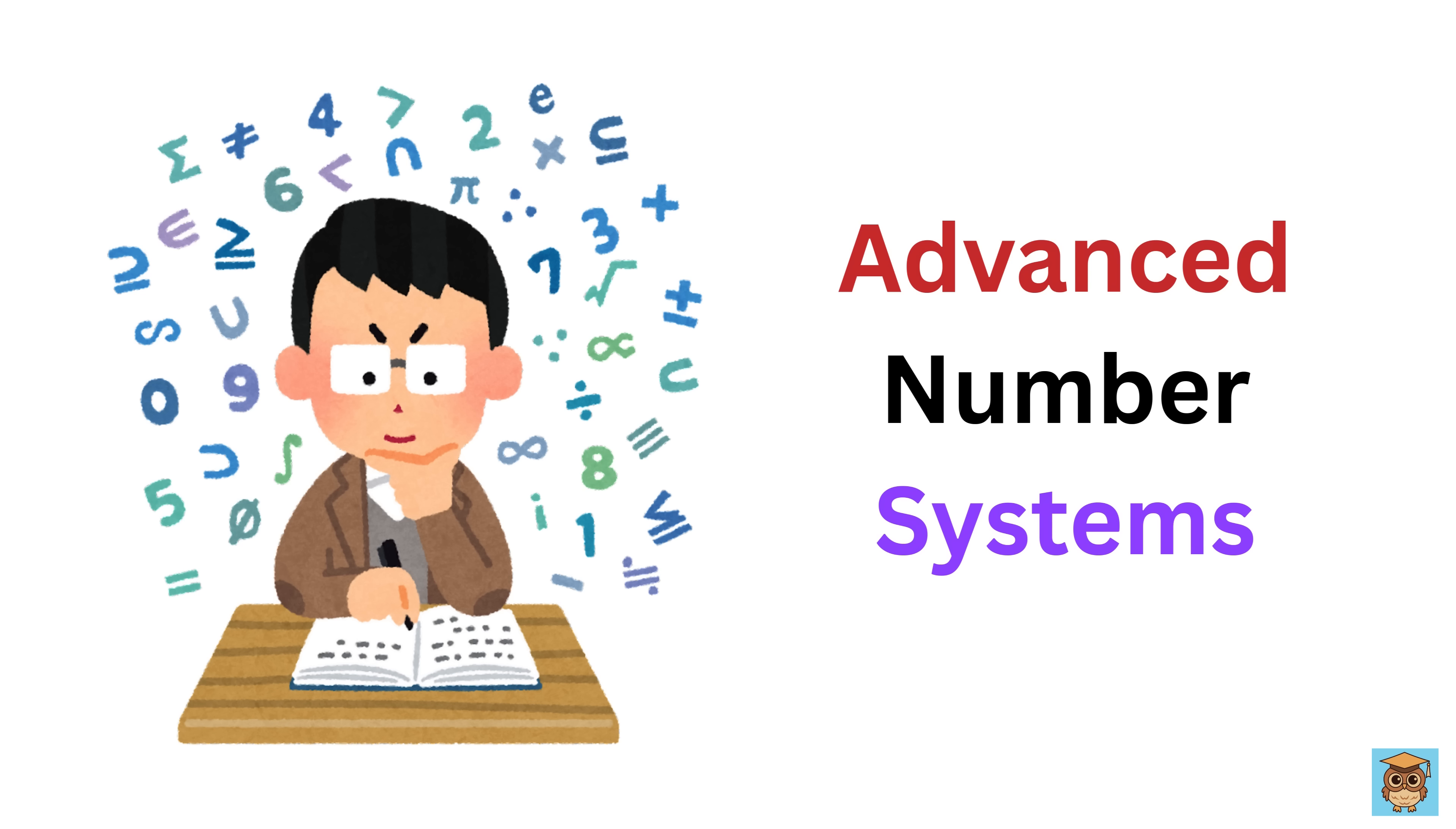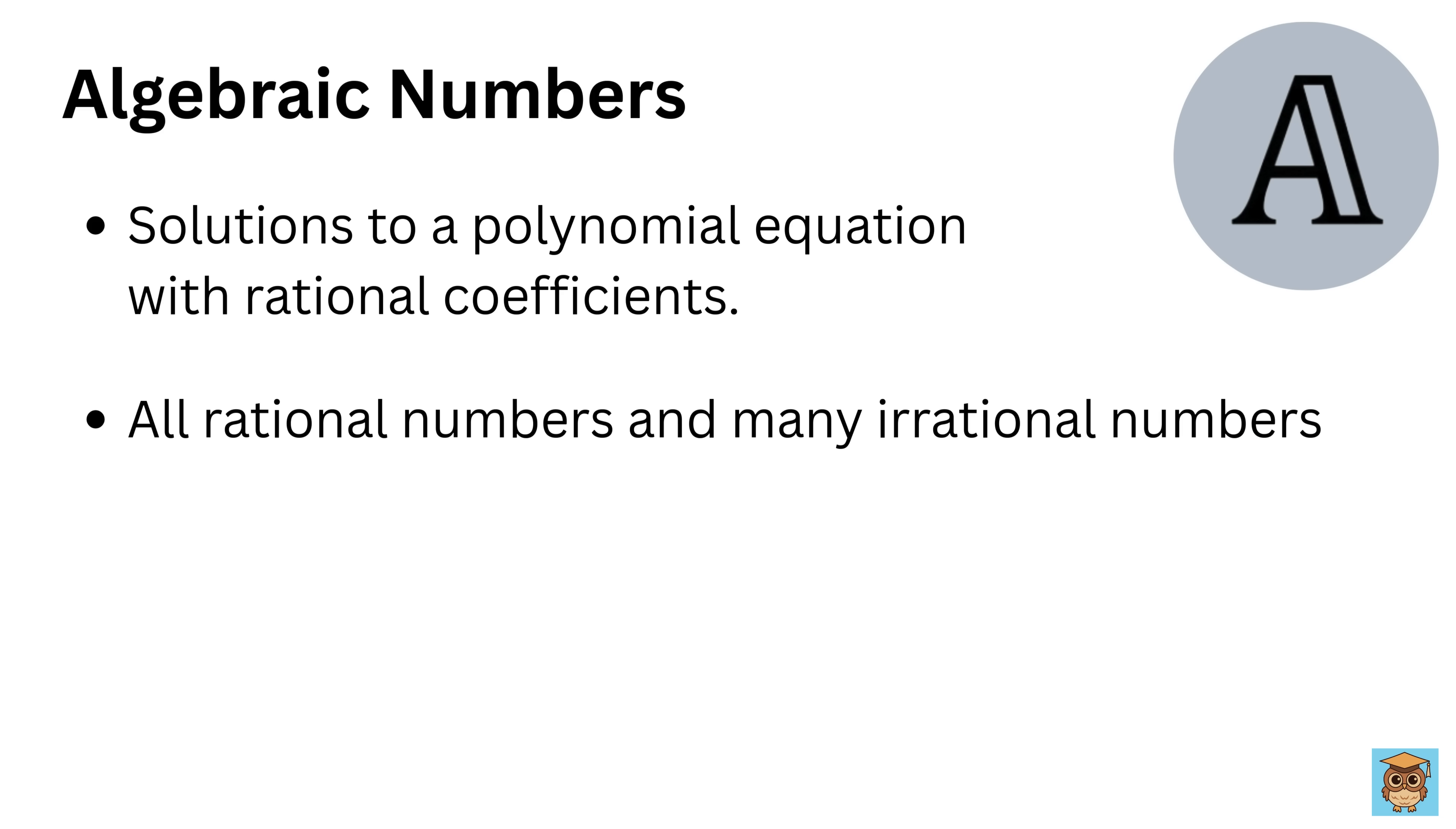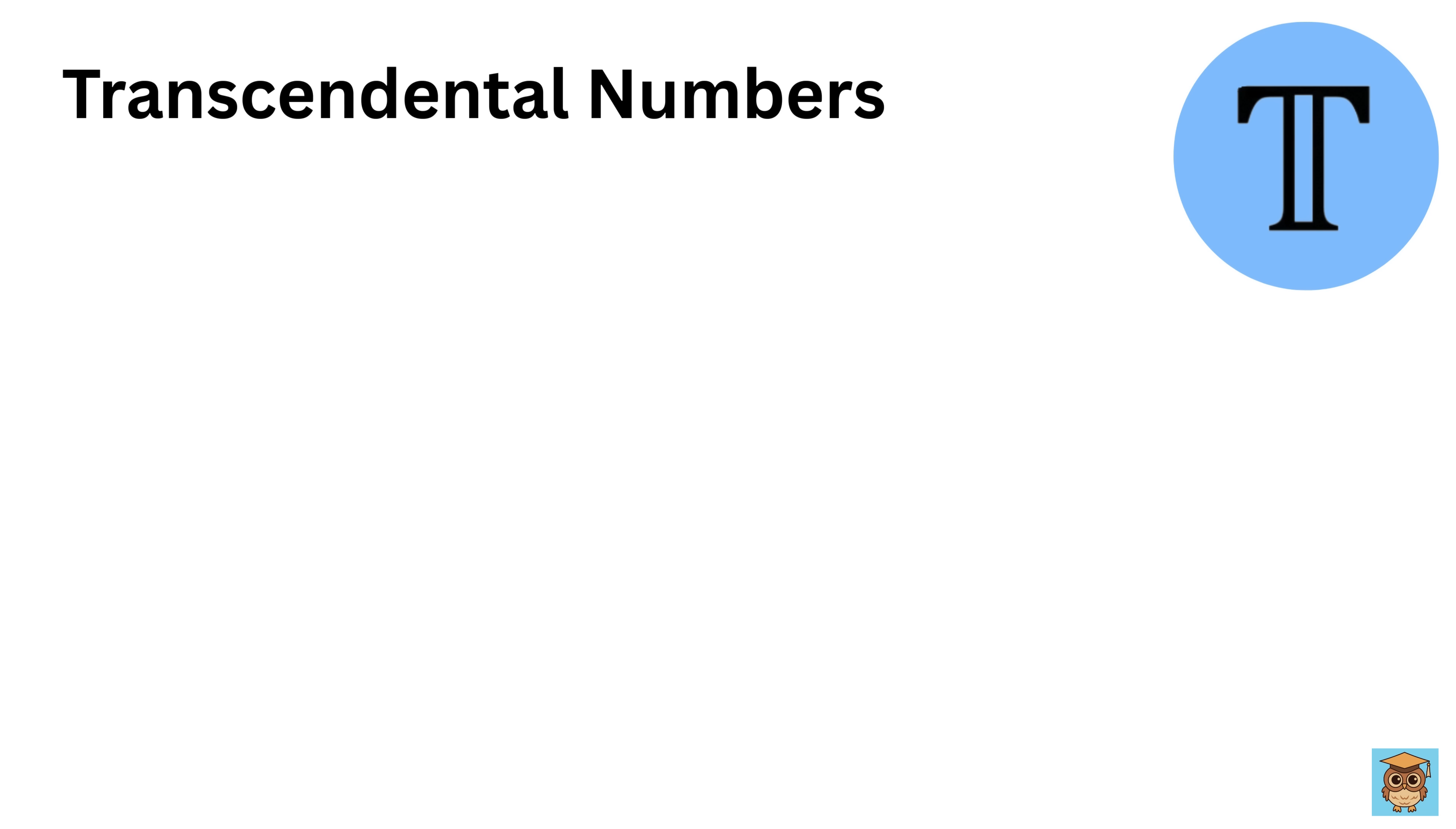Now we will talk about some advanced number systems. Algebraic numbers are any numbers that are solutions to a polynomial equation with rational coefficients. This includes all rational numbers and many irrational numbers like the square root of 2, which is a solution to the equation x squared minus 2 equals 0. Algebraic numbers can be real or complex and are countable. They are contrasted with transcendental numbers.